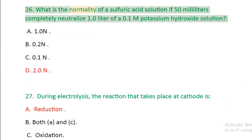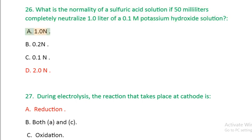Question 26: What is the normality of a sulfuric acid solution if 50 milliliters completely neutralize 1.0 liter of a 0.1 M potassium hydroxide solution? A. 1.0 N, B. 0.2 N, C. 0.1 N, D. 2.0 N.